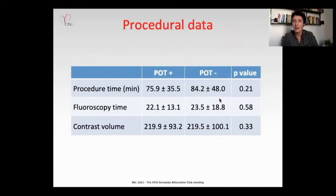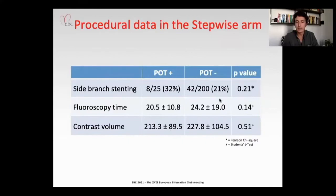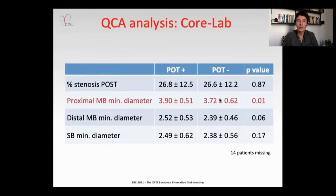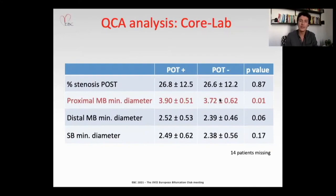QCA analysis by independent core lab found a statistically significant difference in minimal diameter of the proximal main branch between patients who underwent POT or not. No differences were found in minimal diameter in the distal main branch or the side branch. This partially explains why so many more events occurred without correct POT.